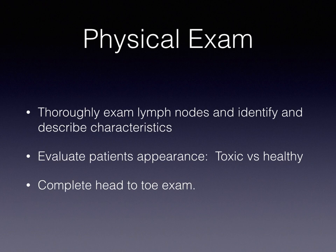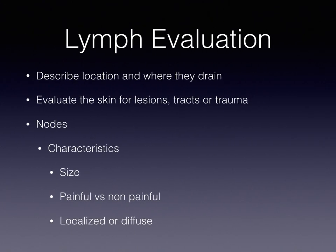For the physical exam, we want to be thorough and assess all lymph node chains where they drain. Describe their characteristics and evaluate the patient's overall appearance — do they look toxic or relatively healthy? Assess the head, neck, axillary region, and inguinal areas. Look at the skin around the lymph node for lesions, tracks, or trauma. When describing nodes, identify their size — lymph nodes greater than two centimeters can be very suspicious for malignancies. Note whether they are painful or non-painful, and whether they are localized or diffuse.